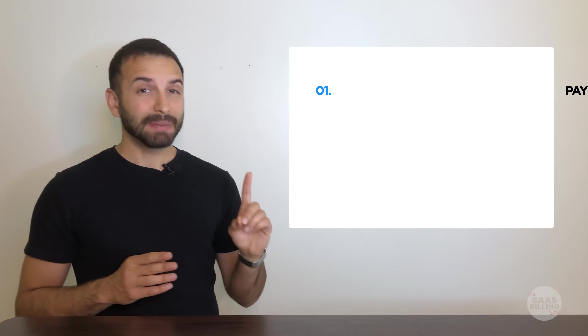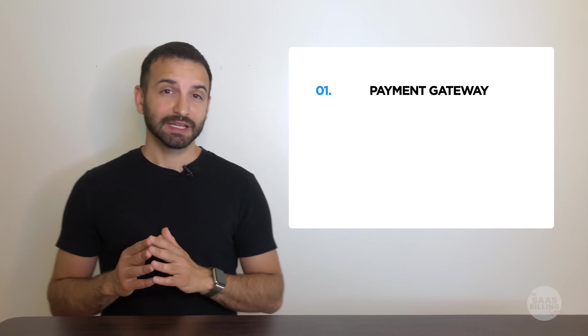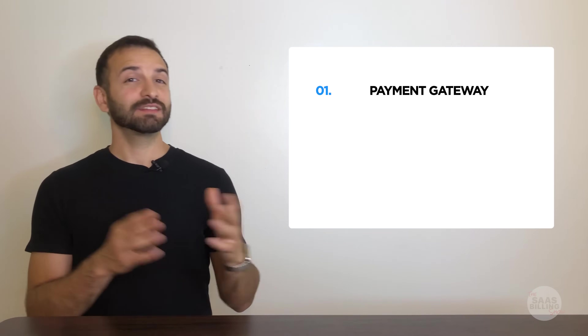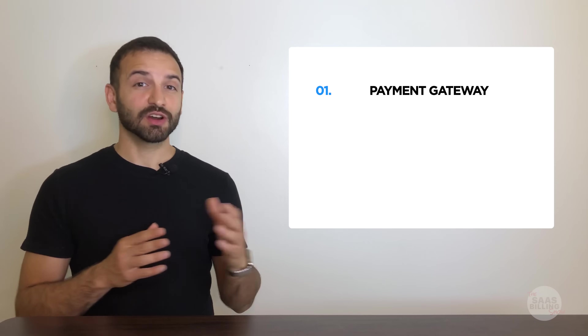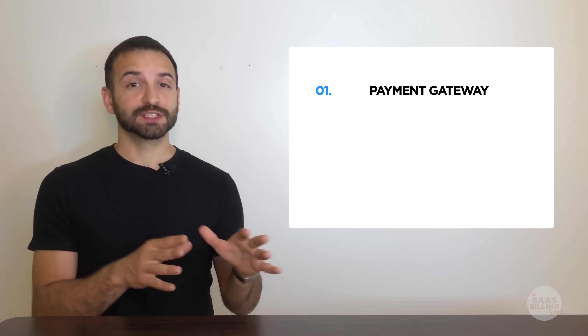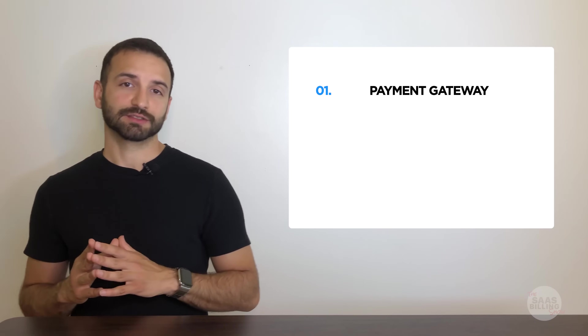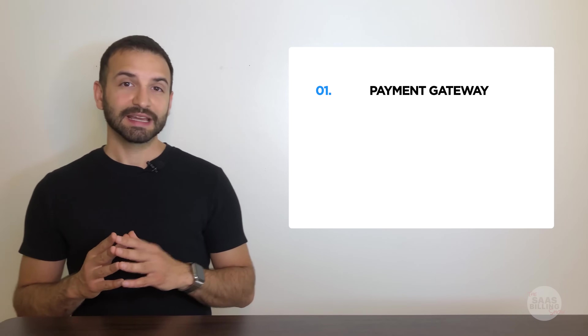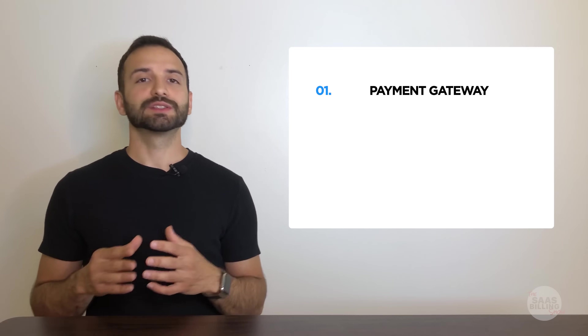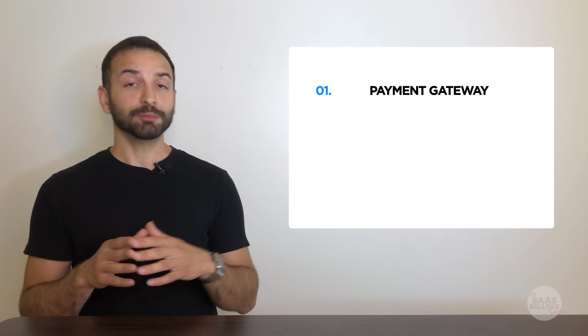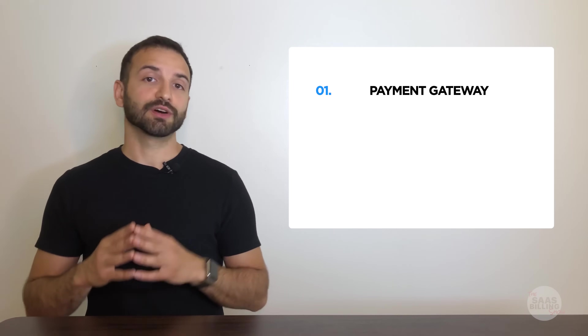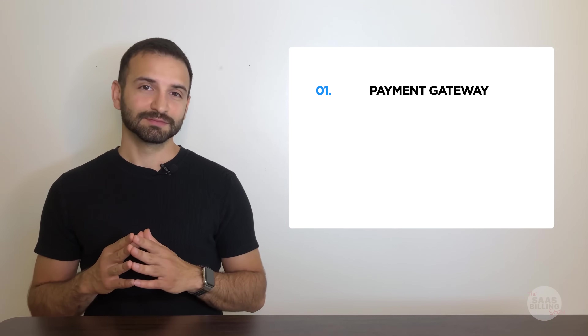SaaS billing consists of three core components. The first is the Payment Gateway. It handles the heavy lifting of online transactions, processes credit cards, and fulfills PCI compliance regulations. Simply put, the Payment Gateway is responsible for delivering the money from your customer's credit card to your bank account safely.